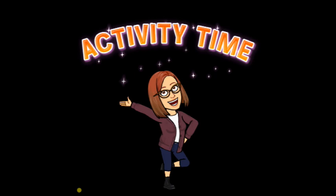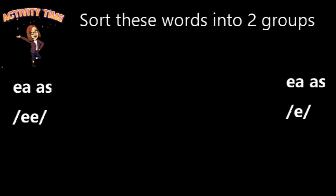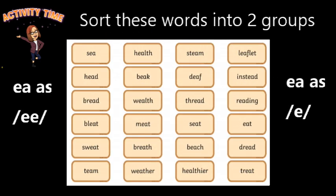And now it's activity time. We're going to go back to sorting the words. We're going to have two groups — get a piece of paper and split it into two. We're going to have one side as the EA grapheme making a long E sound, and the other side as the EA grapheme making a short E sound. You've done this before, I know you can do it. If you need to pause the video so you can see the words, go ahead and sort them.